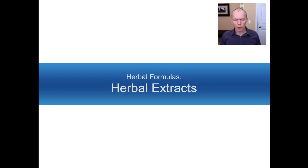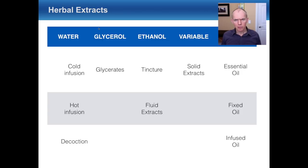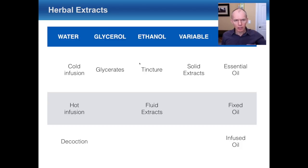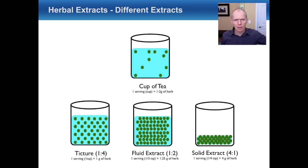The next group of topics covers the different types of herbal extracts used in practice. Based on the solvents discussed, the main ones used in practice are water, glycerol, ethanol, and oil. You can also make solid extracts in a few different ways. We'll begin with water extracts, then teas and tinctures using alcohol, fluid extracts using alcohol, and finally solid extracts, which are even more concentrated.